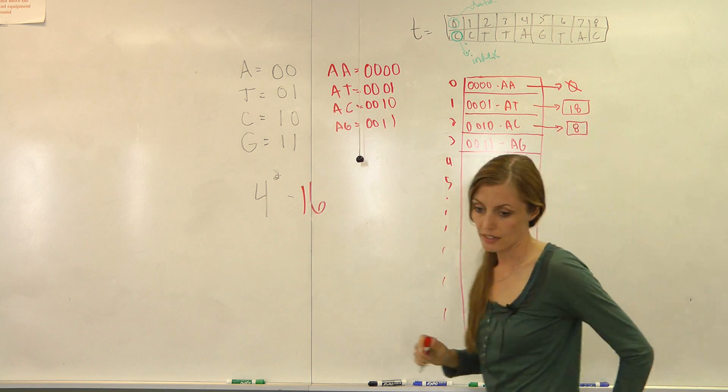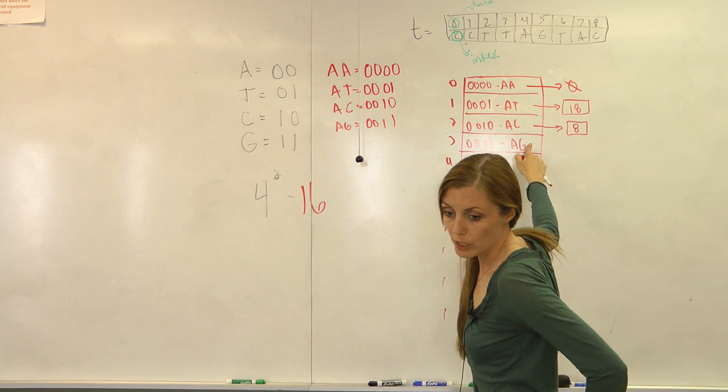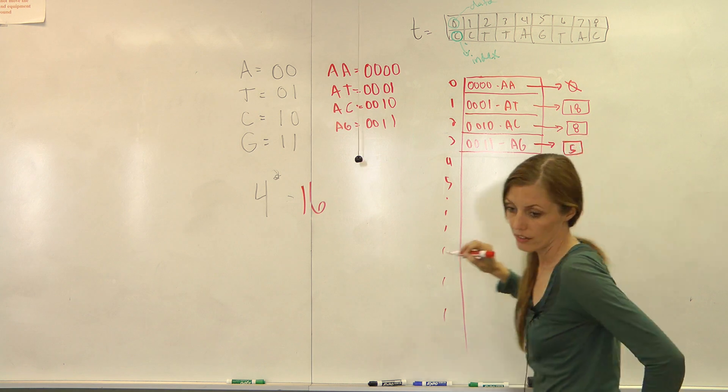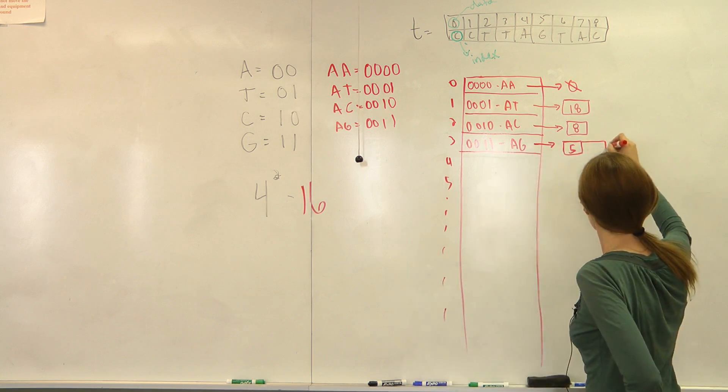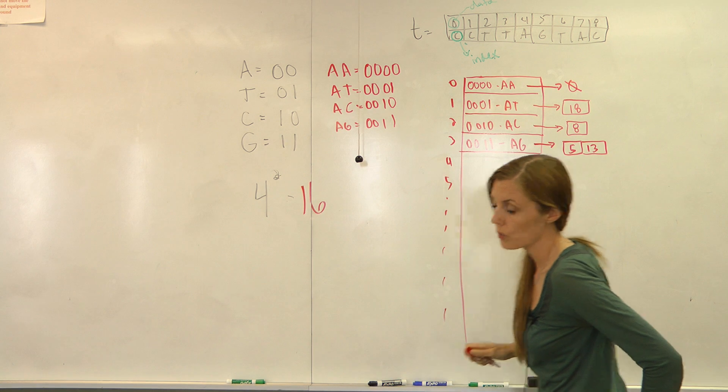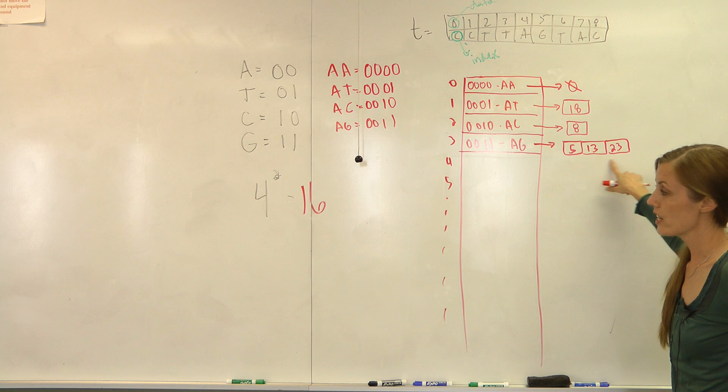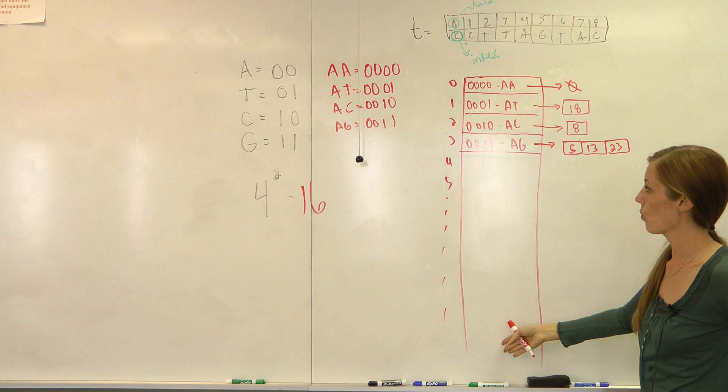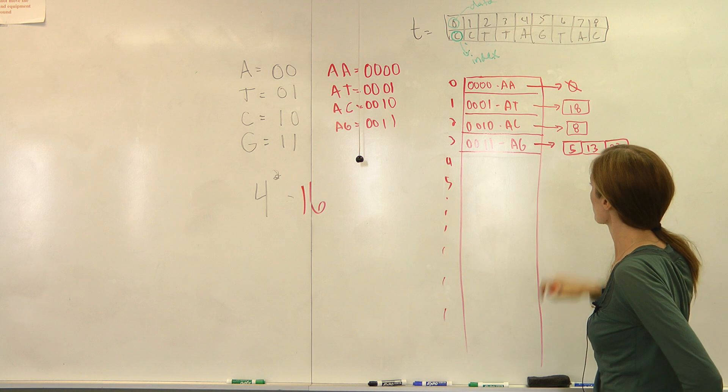And then the next one would be AG. And we look, there is one at index 5, and there is also one at index 13, and there is also one at 23. So this is how we do the chaining. And then you continue on and make sure that you have all the values in order and there are associated indexes from the text.